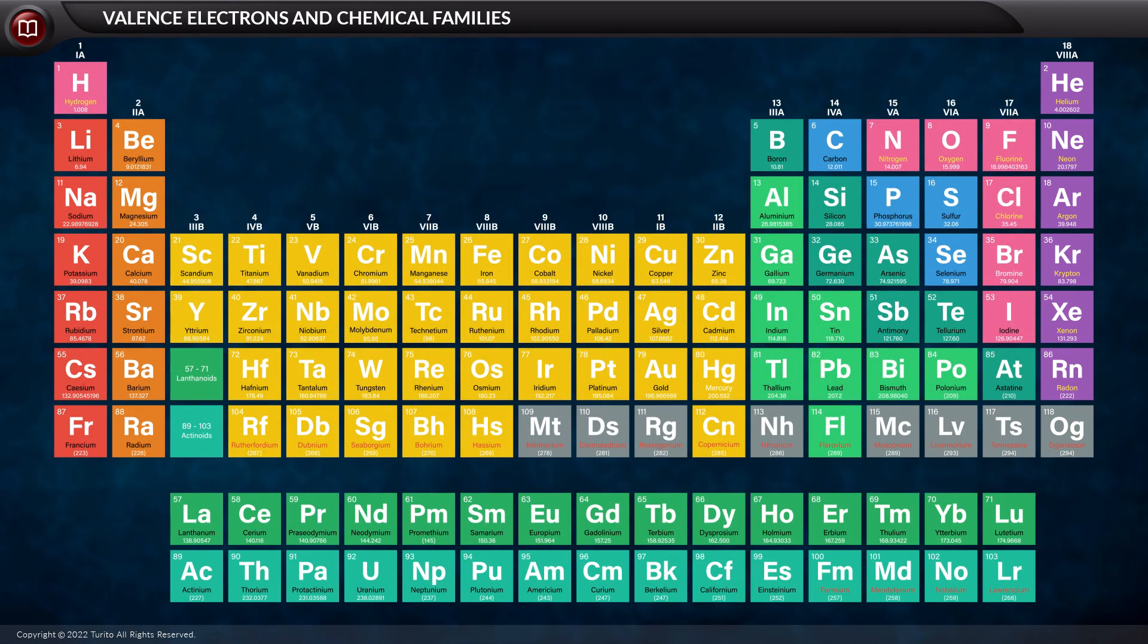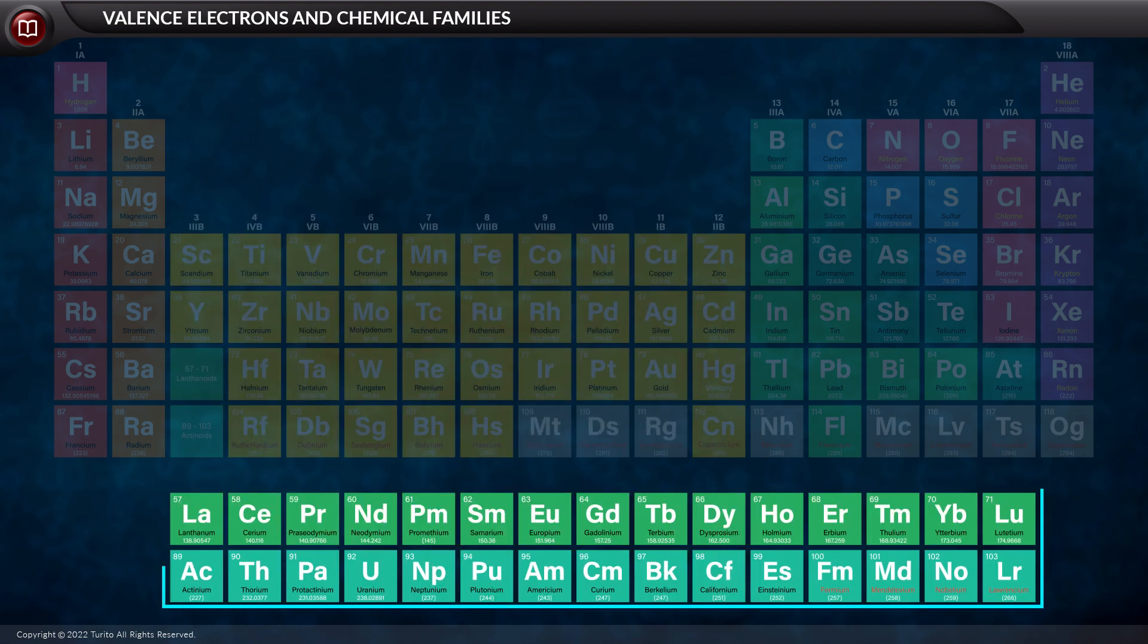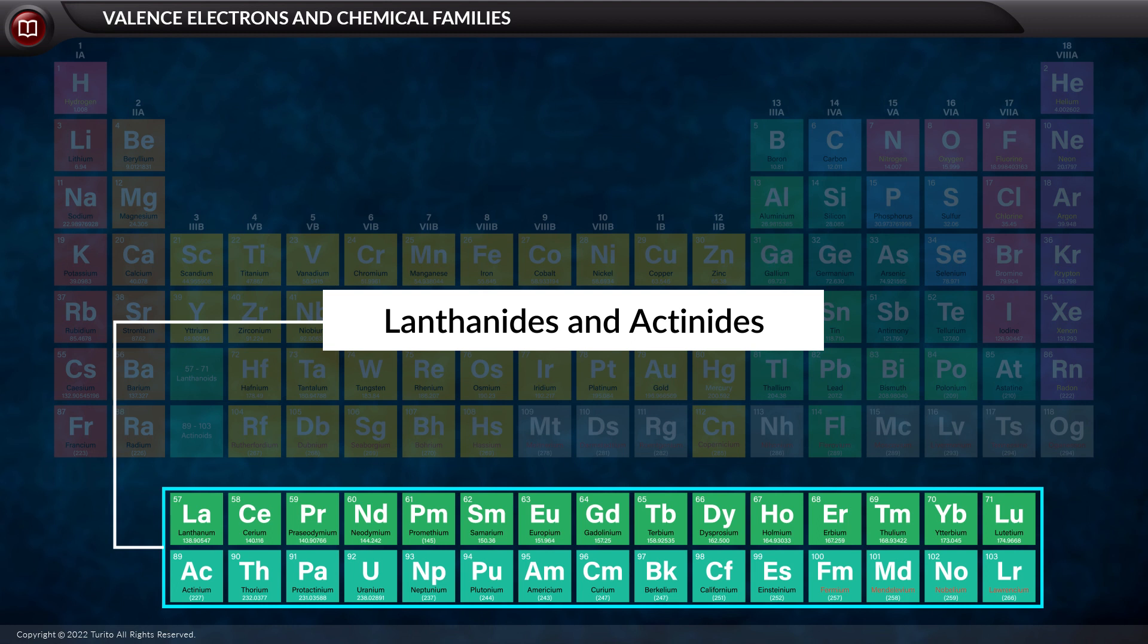There are many exceptions that can be seen in the electronic configuration of groups 3 to 12, and we shall study them in detail when we are in the chapter discussing D-block elements. While the elements present at the bottom are lanthanides and actinides, which are the part of F-block, these elements also show many exceptional electronic configurations.